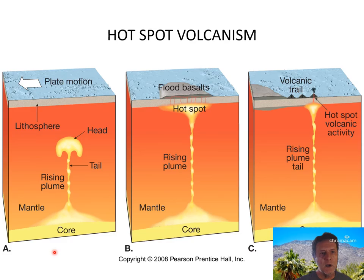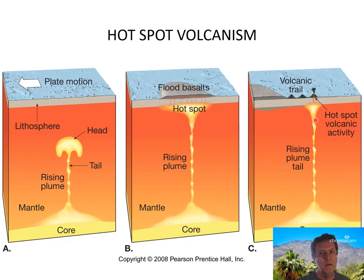We also have a tectonic scenario of hot spot volcanism, where a rising mantle plume feeds melting of the lithosphere, causing the formation of flood basalts or a volcanic chain. In the case of the Hawaiian chain, the hot spot is underneath the active Hawaiian island. The older volcanoes have moved off the hot spot, so they are no longer active.